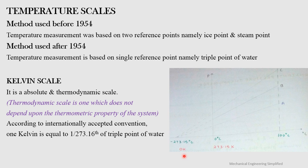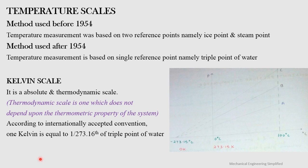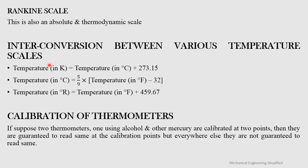Beyond 0 K, you cannot go because pressure would fall to a negative value, and absolute pressure cannot be negative. So −273.15°C is the minimum possible temperature at which absolute pressure becomes zero. This value is theoretical — no one has reached it yet, though researchers have come very close.